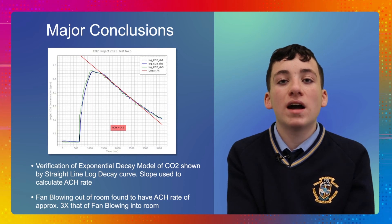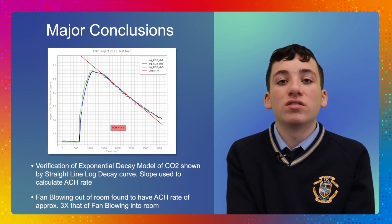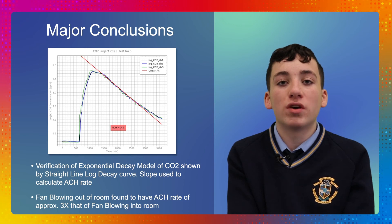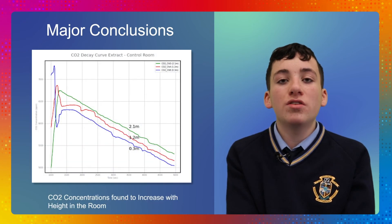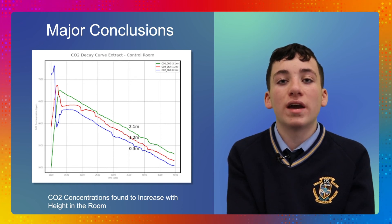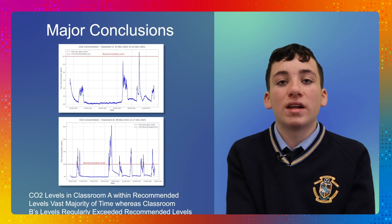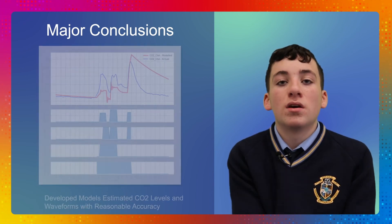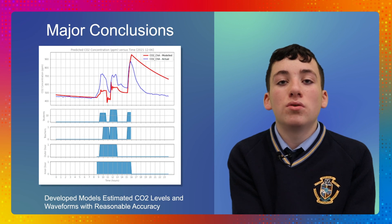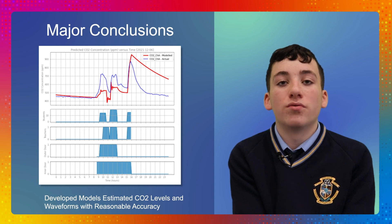It was found that both the passive and fan-assisted active ventilation techniques followed the standard exponential decay model of CO2 concentration, and that fans blowing air out of rooms gave an ACH rate of approximately three times that of fans blowing air into rooms. CO2 concentrations were found to, in fact, increase with height, and this is an inversion of the stratification of CO2 that might be expected. The CO2 levels in classroom A were within recommended levels the vast majority of the time, whilst in classroom B the CO2 peaks consistently exceeded these levels. The models developed predicted CO2 levels with reasonable accuracy and gave good qualitative predictions of CO2 concentration waveforms.